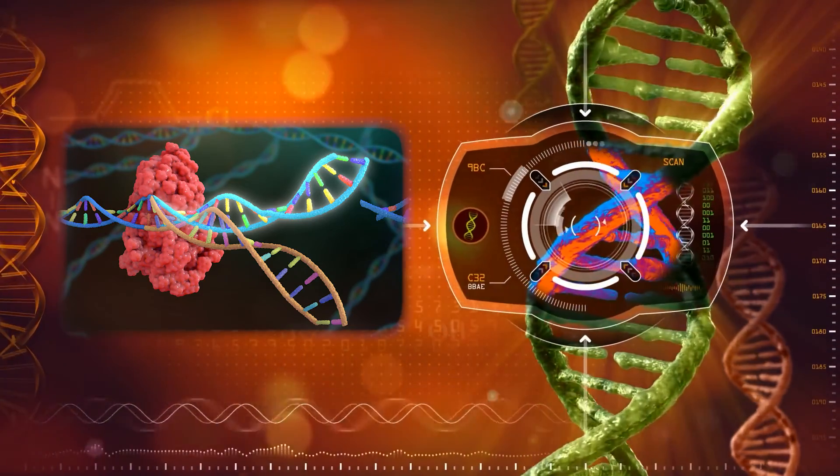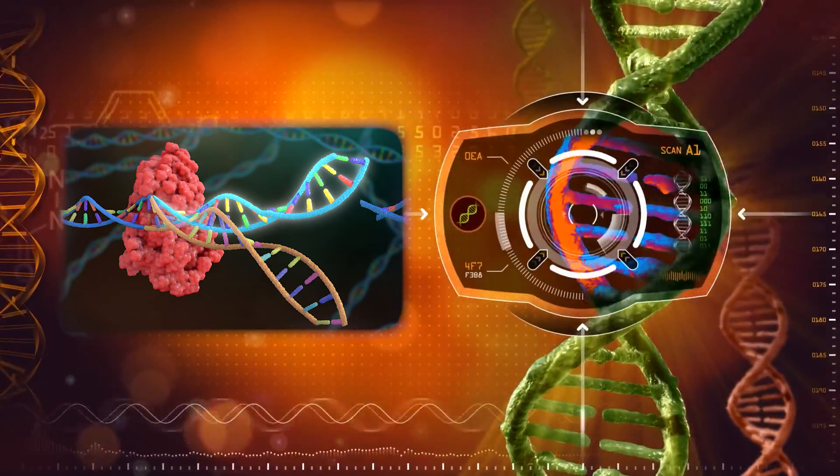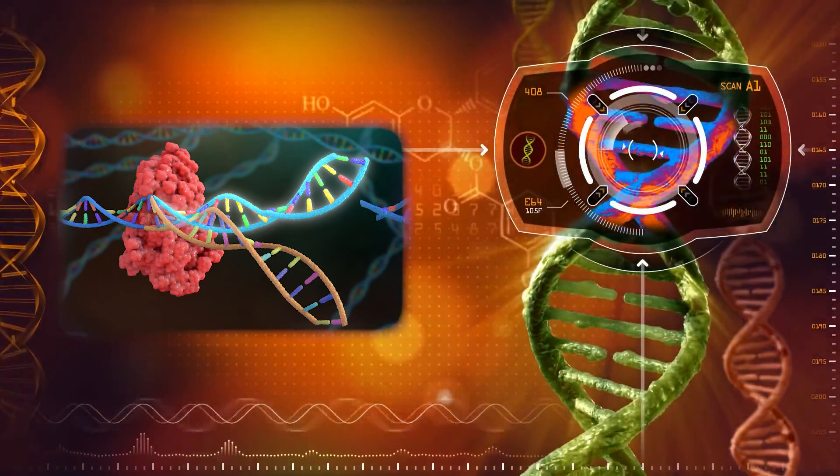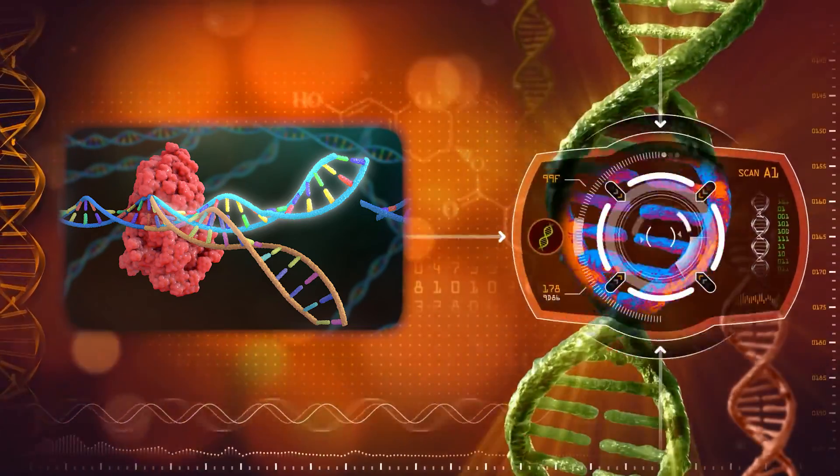As its name suggests, the guide RNA is a short sequence of RNA that guides the Cas9 enzyme to this precise location along the DNA sequence.